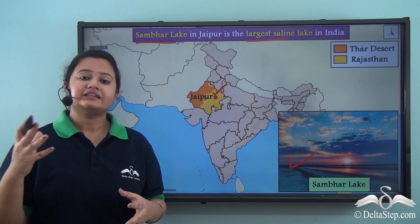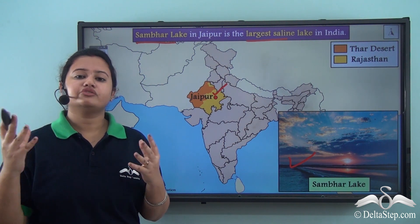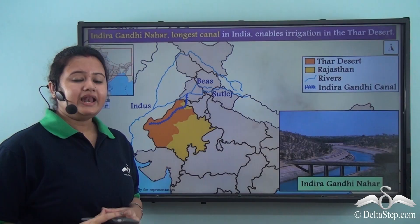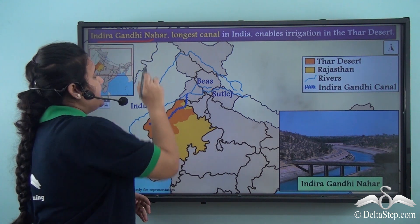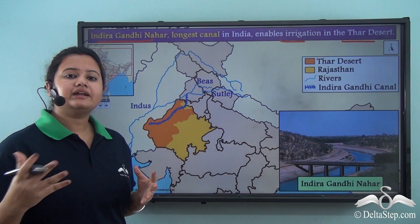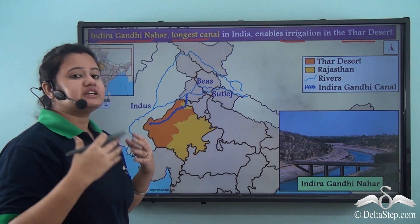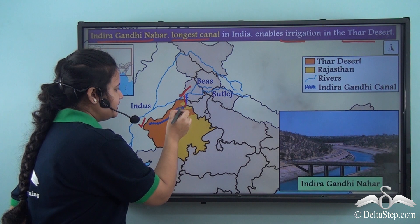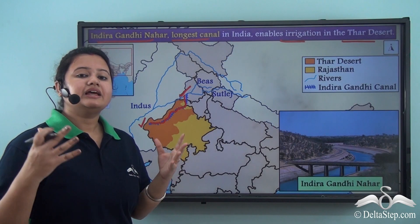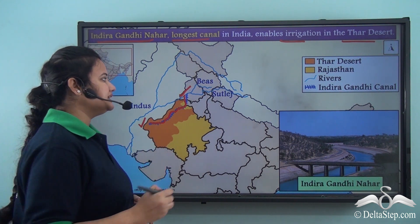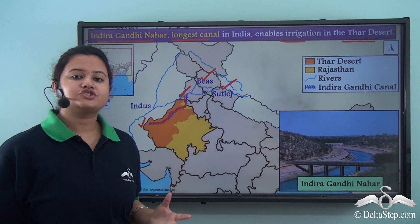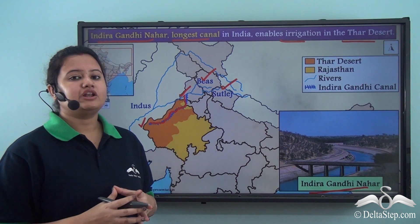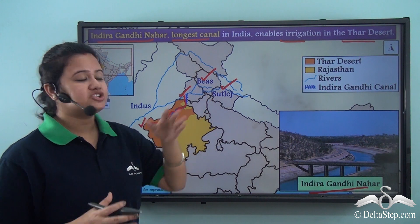Going back to the fact that Thar Desert is a dry barren region with a lack of water resources — is cultivation of crops possible in such a region? Well, the construction of a canal named the Indira Gandhi Canal has made irrigation possible in Thar Desert. Indira Gandhi Nahar is the longest canal in India. It runs from the southern part of Punjab to the western edge of Rajasthan, draining the entire region of Thar Desert. This canal derives water from two prime tributaries of the River Indus — the Beas and the Sutlej.